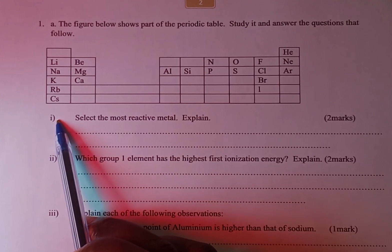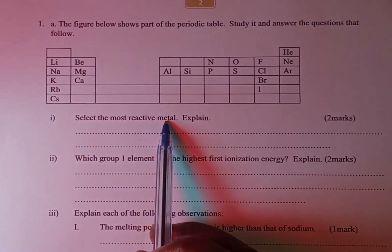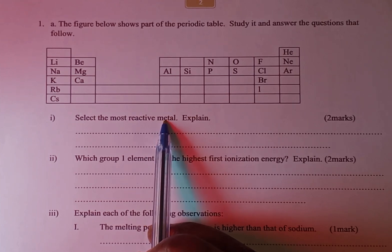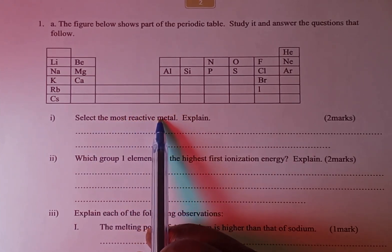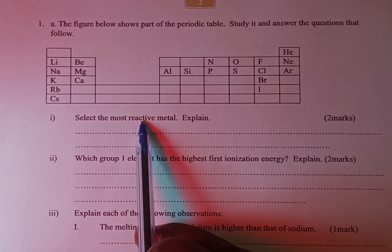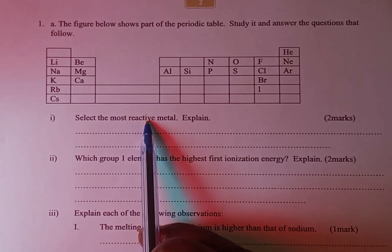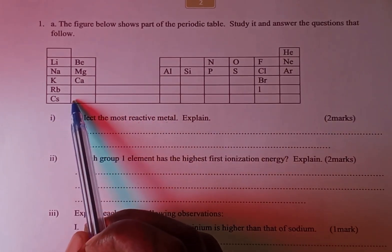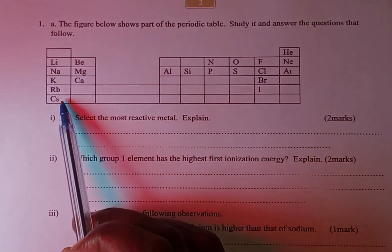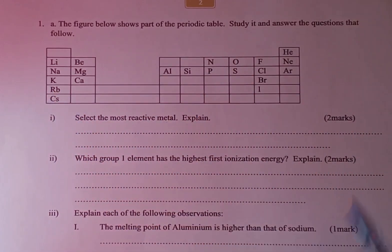Roman numeral 1: select the most reactive metal. Remember, elements react by either losing or gaining electrons. For metals, they react by losing electrons. When selecting the most reactive metal, we look at the metal that has the largest atomic radius, because that is the metal that can most easily lose an electron. Looking at elements in groups 1, 2, and 3, the one with the largest atomic radius is cesium.